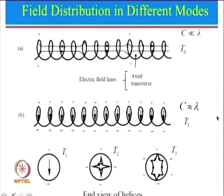For an end-fire array there should be a phase delay, and we can think of a progressive delay in the wave. As the helix is rising, there will be two components: a horizontal component and a vertical component at every point. If we choose the rise angle appropriately, we can ensure that the horizontal and vertical components are approximately equal and the phase between them equals 90 degrees, and that is how we get circularly polarized radiation.